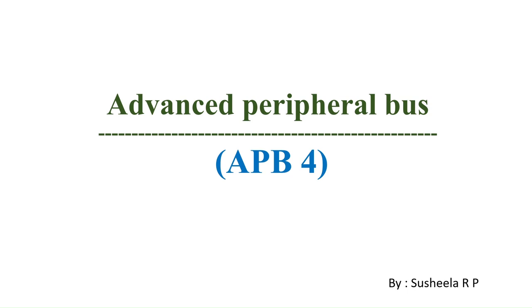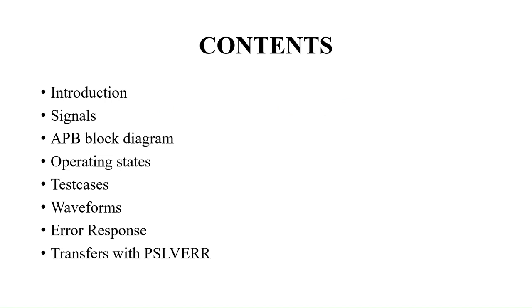Hi all. In this session we are going to discuss about the Advanced Peripheral Bus, that is the APB protocol. We are going to discuss the APB4 specification. We have APB2, APB3, APB4, and APB5, but in this session we focus on APB4. APB4 also consists of APB3, but the difference is that APB4 has two more signals: a protection signal (PPROT) and a strobe signal (PSTRB).